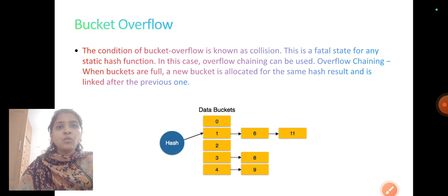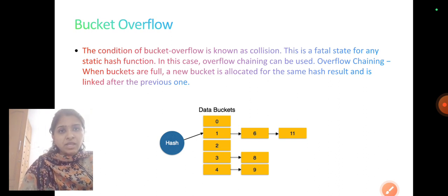So what is bucket overflow? The condition of bucket overflow is known as collision. This is a fatal state for any static hash function. In this case overflow chaining can be used. When buckets are full a new bucket is allocated for the same hash result and is linked after the previous one, as shown in the picture.